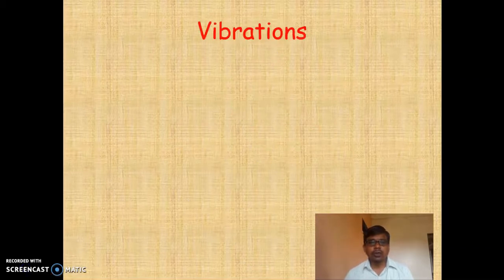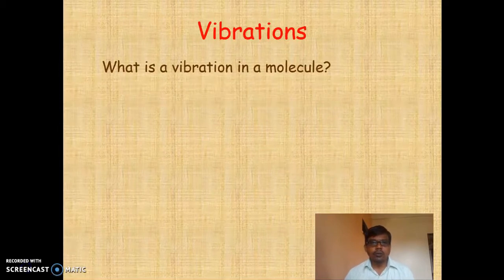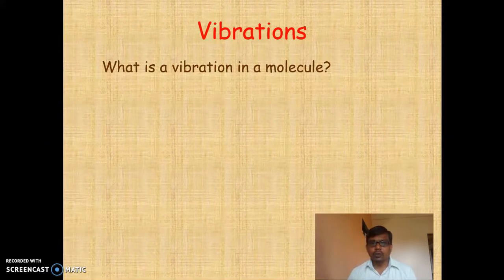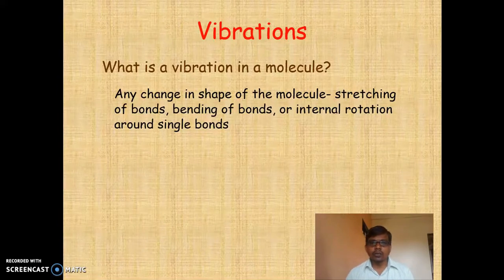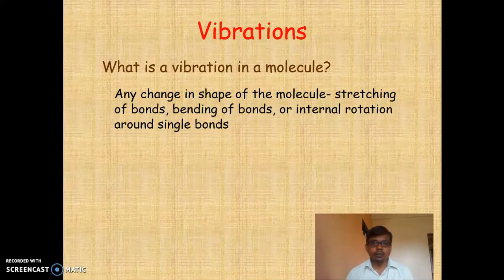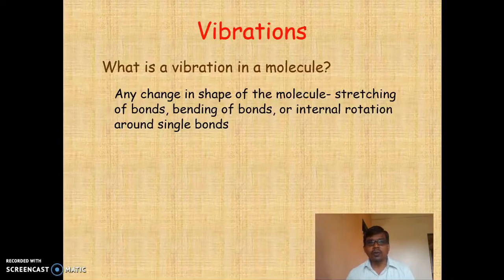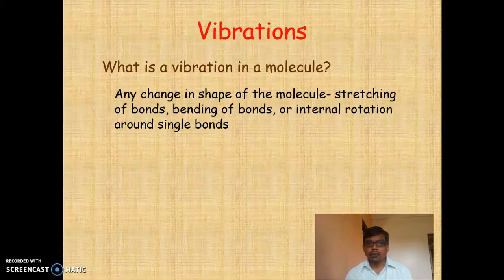In order to understand IR spectroscopy, we must know about the vibrations — what is vibration in a molecule. When IR light interacts with the molecule, there could be certain vibrations. These vibrations are of two types: stretching vibration and bending vibration. In stretching vibration, the bond angle will remain the same, while in bending vibration, the bond angle will change. Stretching vibrations are classified into two categories, while bending vibrations are classified into four categories. We will discuss these vibrations in detail in the next slide.